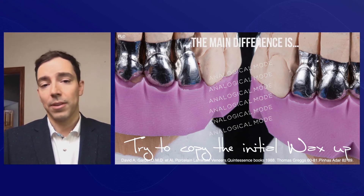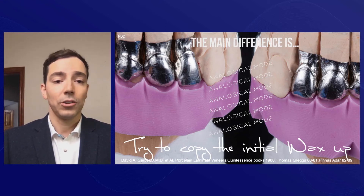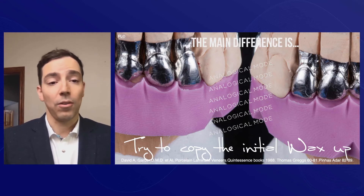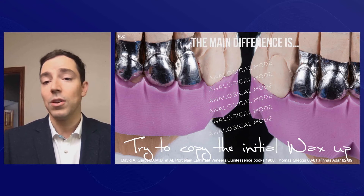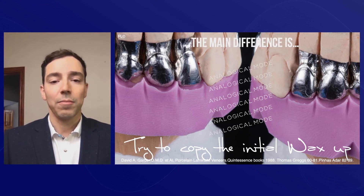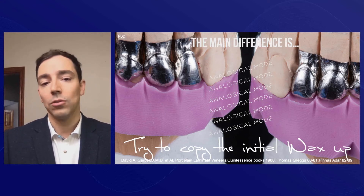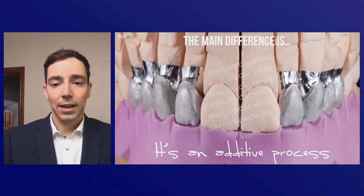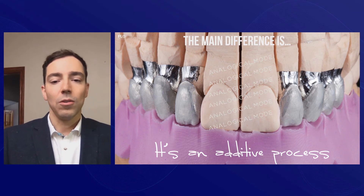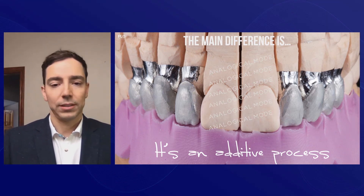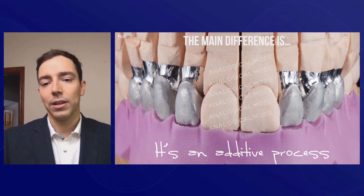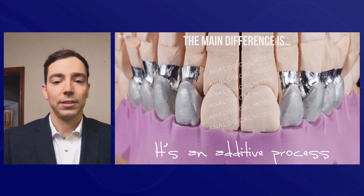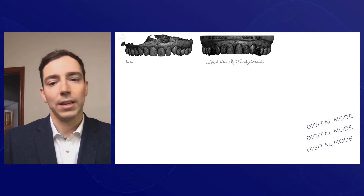In the analogical mode, we make the wax-up, everything works, and then we have to make a copy of our initial workshop. As you can see here, our technician made the silicon index to try to copy the wax-up we decided to start with. This is an additive process — you can see we are doing layering by layering. That is the main difference we can see here.